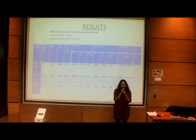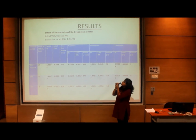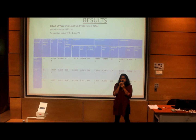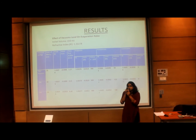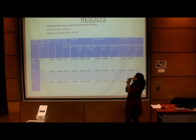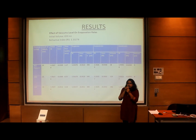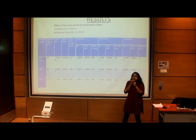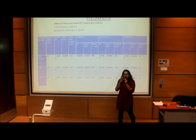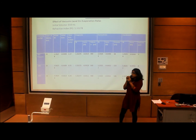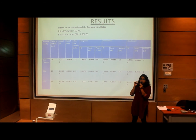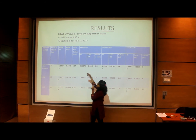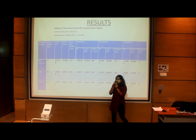I'll be presenting the results of this experiment. The effect studied is the vacuum level, which corresponds to pressure. The three pressures studied were atmospheric pressure at 760 mmHg, negative 200 mmHg, and negative 400 mmHg. The initial volume of potassium permanganate in the feed tank was 650 ml, and the initial concentration, calculated using refractive index, showed a value of 1.33278. The table shows negative concentration values, which I will explain shortly.